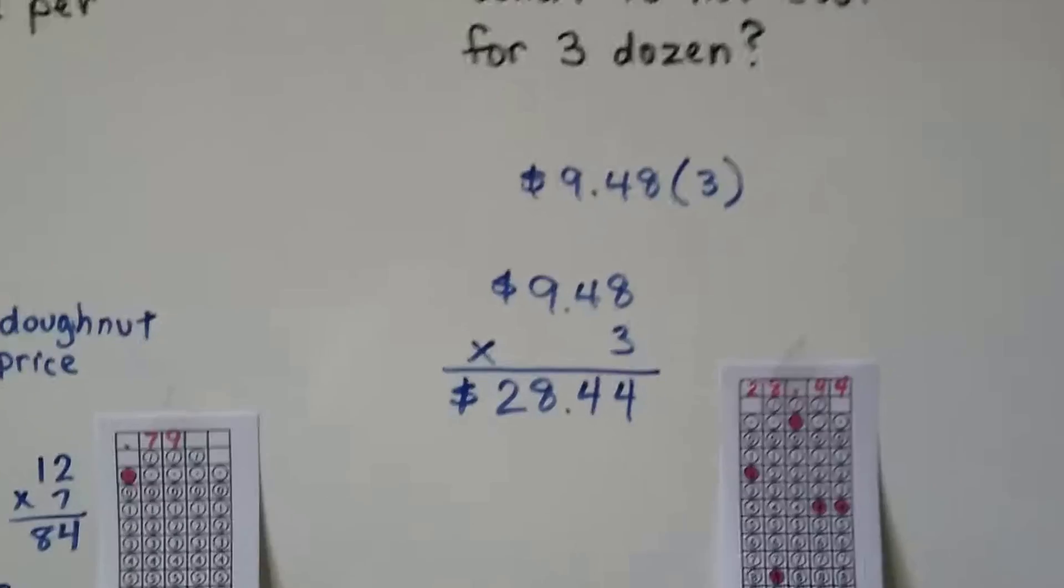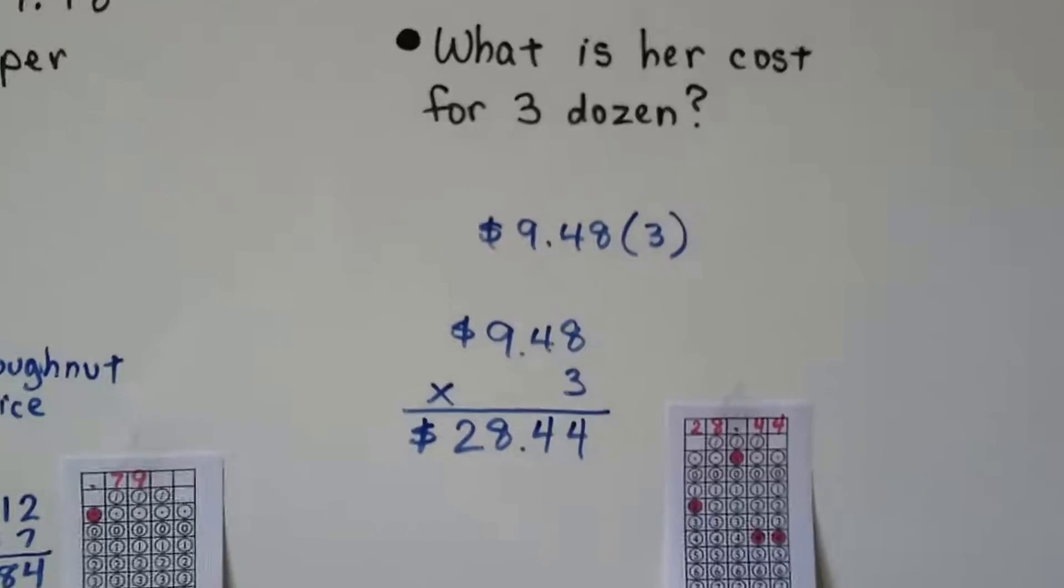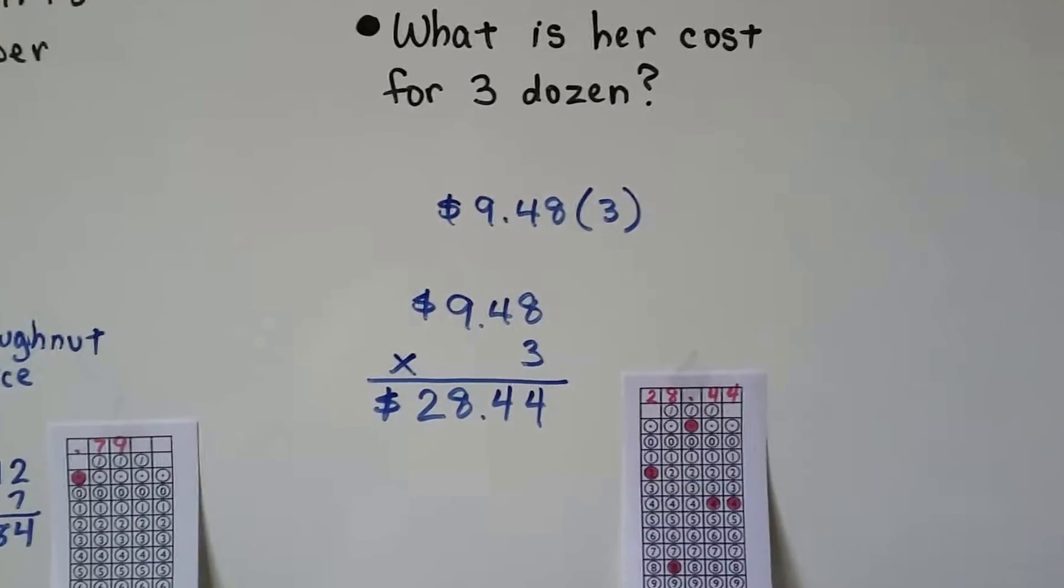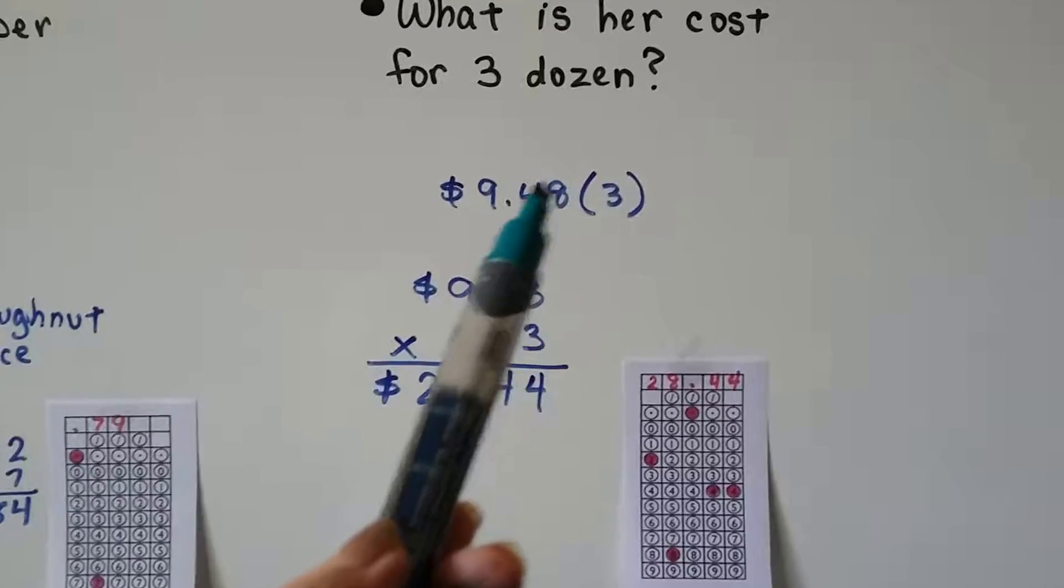Now, what is her cost for three dozen? Well, it was $9.48 for one dozen. So we're going to multiply it by three. Remember, if it's in parentheses, that means multiply.